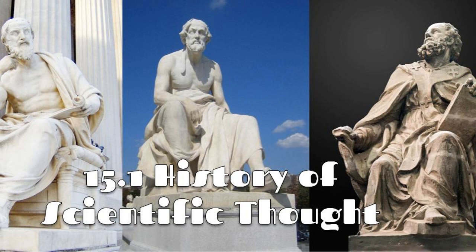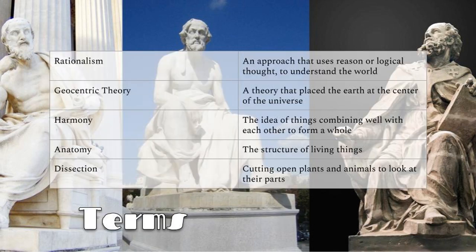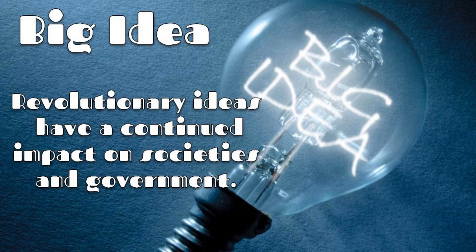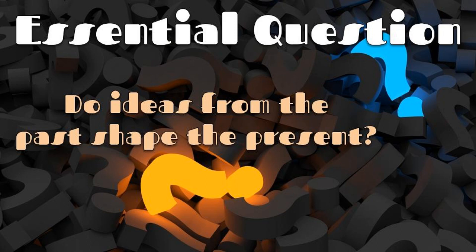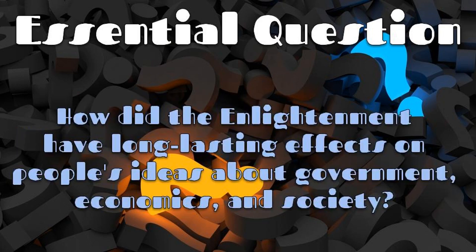In this lesson, you guys are going to learn about the history of scientific thought. And like always, we've got some vocabulary words and key terms that you are going to need to be responsible for. They are rationalism, geocentric theory, harmony, anatomy, and dissection. And a reminder, when you hear this sound, it means you just heard a vocabulary word. In addition to that, we have a big idea for the unit, and that is: Revolutionary ideas have a continued impact on societies and government. And we have two essential questions. The first one, do ideas from the past shape the present? Second is, how did the Enlightenment have long-lasting effects on people's ideas about government, economics, and society?